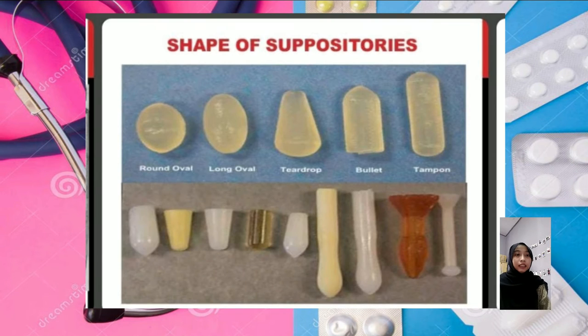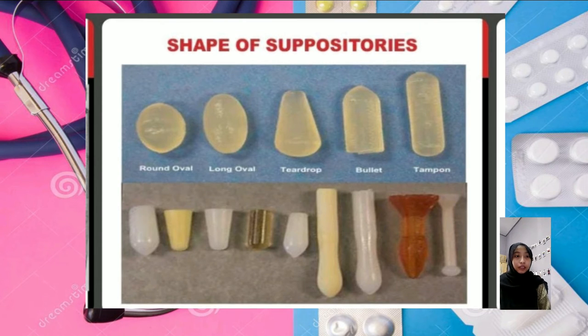This picture shows the shapes of suppositories, such as round oval, long oval, tear drop, bullet, and ten-point shapes.